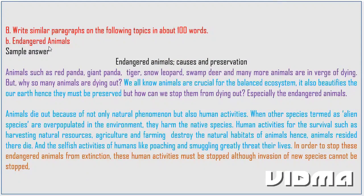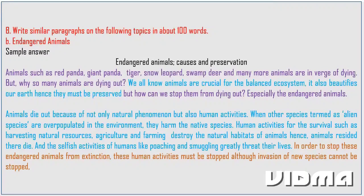Next topic: Endangered Animals. Animals such as red panda, giant panda, tiger, snow leopard, swamp deer, and many more are in danger of dying out. But why are so many animals dying out? We all know animals are crucial for a balanced ecosystem. They also beautify our Earth. Hence, they must be preserved. But how can we stop them from dying out — especially the endangered animals? Animals die out because of not only natural phenomena but also human activities.